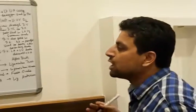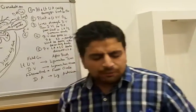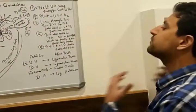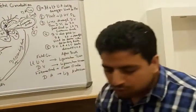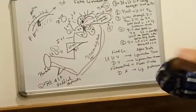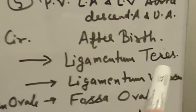Now we are going to know some changes after birth — when a baby takes a first breath after delivery. What kind of changes occur? The remnants which are left after birth: left umbilical vein changes into ligamentum teres. You remember — left umbilical vein changes into ligamentum teres.